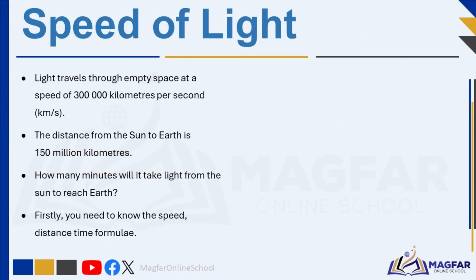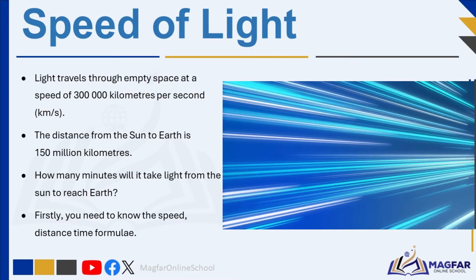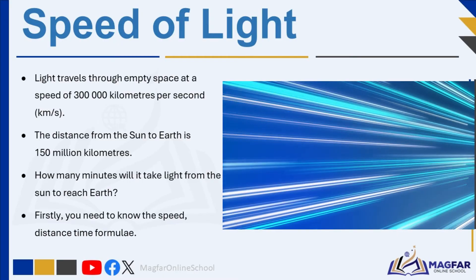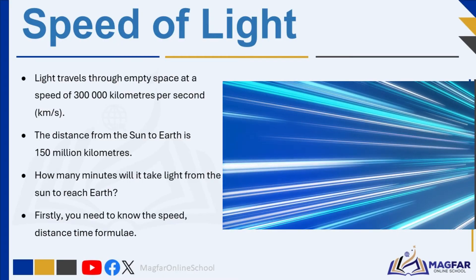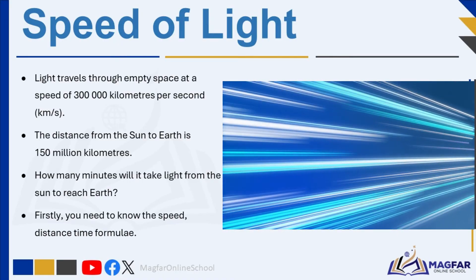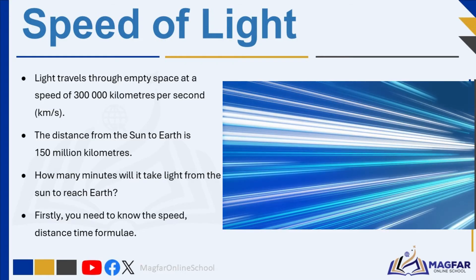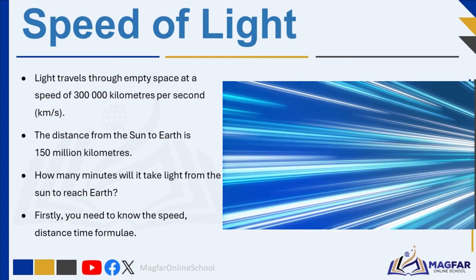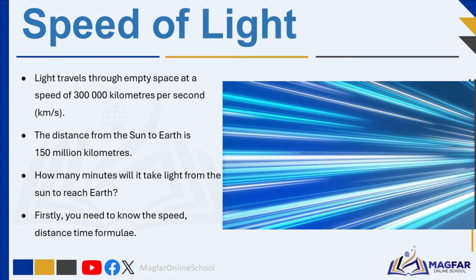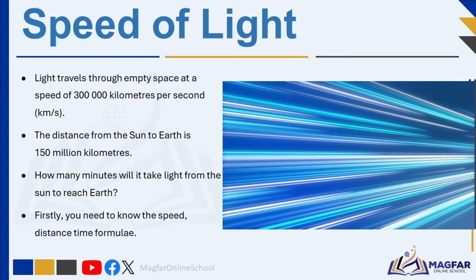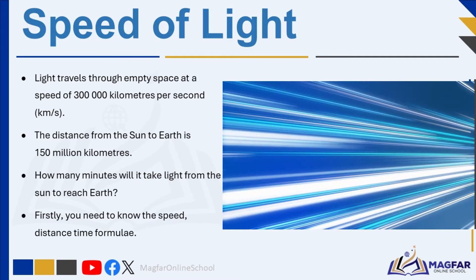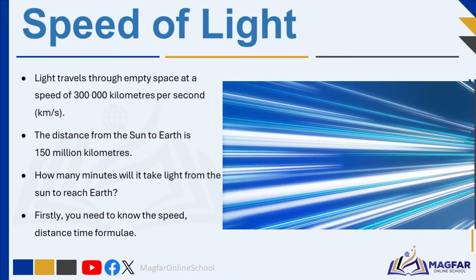Light travels through empty space at a speed of 300,000 km per second. The distance from the sun to earth is 150,000,000 km. Light also travels about a million times faster than sound, so you see lightning before you hear thunder.